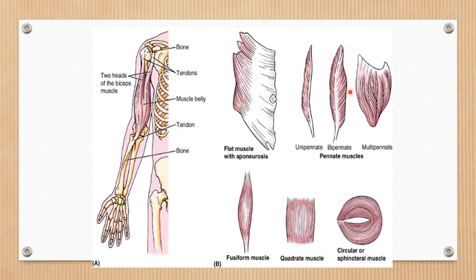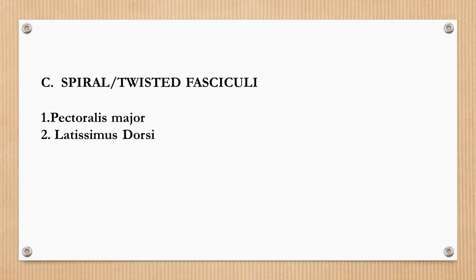You can differentiate between the obliquely arranged pinnate muscles and the parallel running fibers of fusiform and quadrate muscles, where the fibers are attached parallel to each other. Another type of muscle is the spiral arranged or twisted fasciculi, known as spiral muscles. When muscle fibers are spiralized and twisted at 90 degrees, the example is pectoralis major.